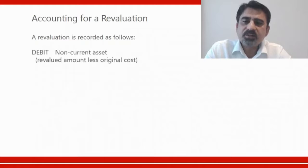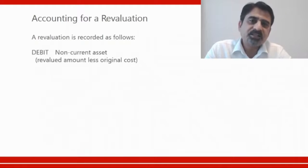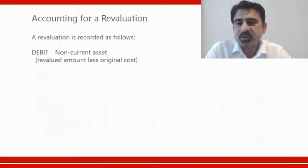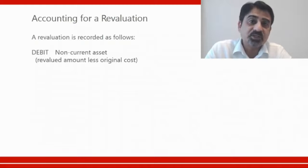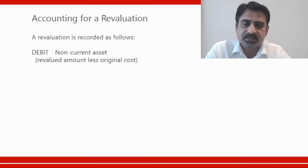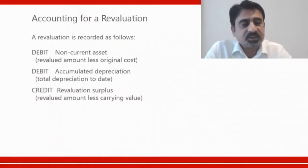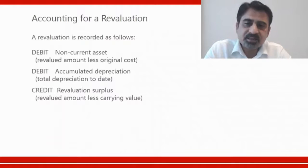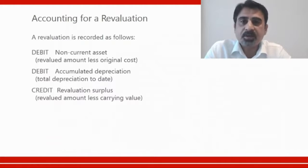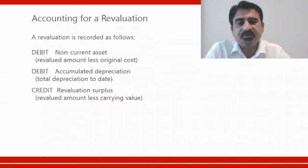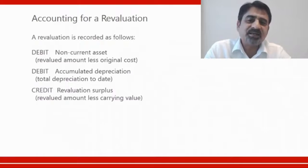Revaluation is recorded as follows: debit the non-current asset for the difference between the revalued amount and the original cost, debit accumulated depreciation, and credit revaluation surplus. The revaluation surplus represents the gain in the asset value. This is a very important double entry — please remember it well.